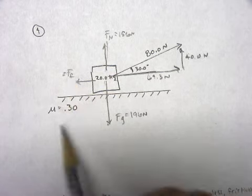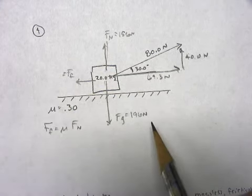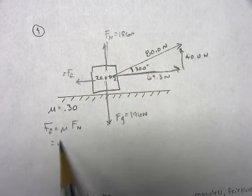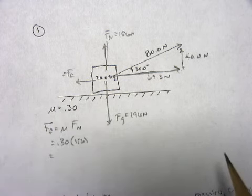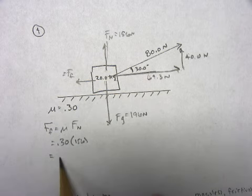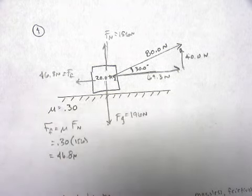Now I can find what my friction force is. My friction force is the coefficient times the normal force. The coefficient is .30. The normal force is 156. So if you take .30 times 156, you get 46.8 newtons. So that's what the friction is, 46.8 newtons.